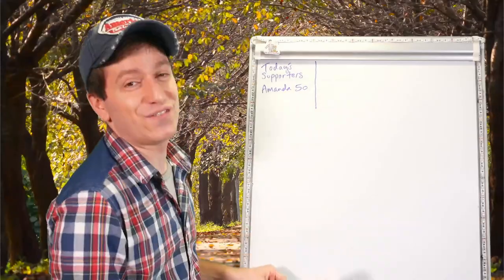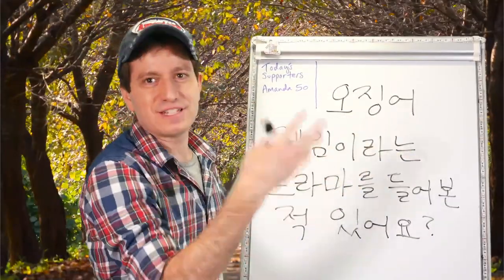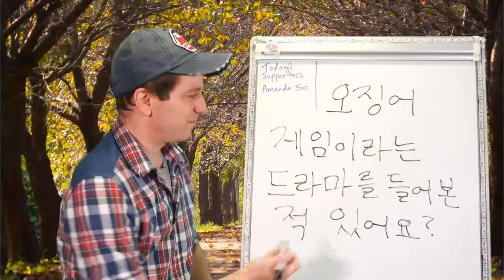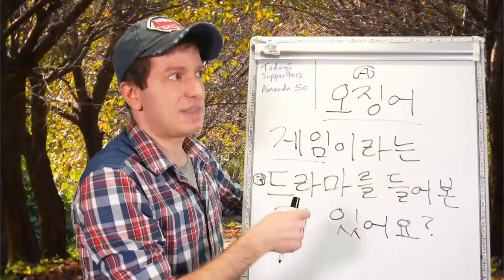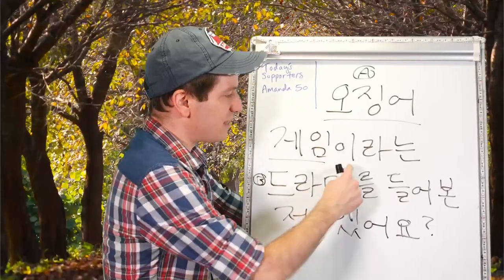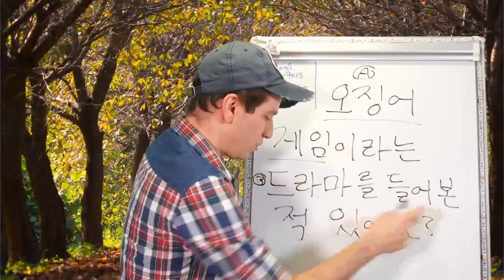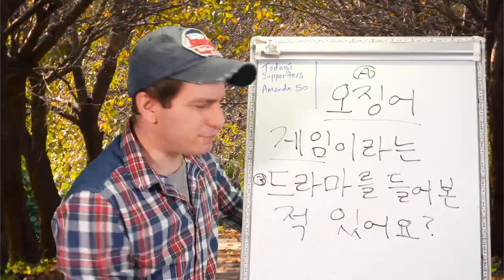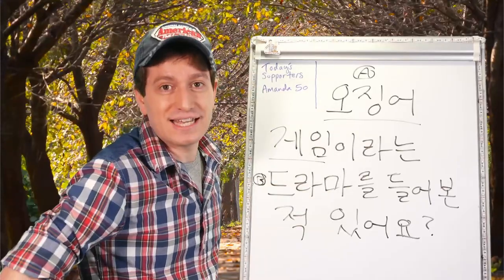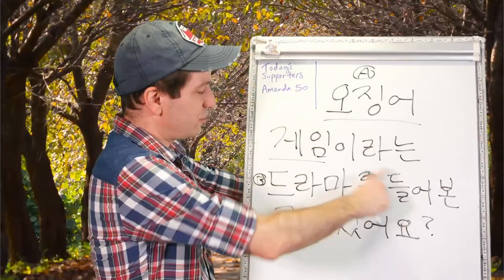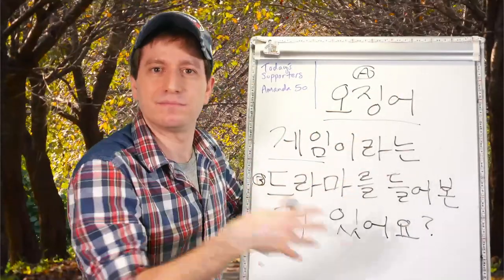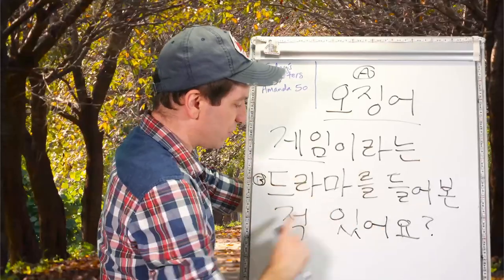Let's go into our first example sentence. 오징어 게임 — Squid Game 이라는 드라마. So a drama that is called, titled, or named 오징어 게임. 들어본 적 있어요? Have you ever heard of the drama Squid Game? Have you heard about the drama called Squid Game? 오징어 게임이라는 드라마를 들어본 적 있어요?